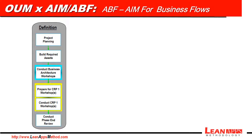ABF methodology presents five phases, just like OUM. The first one is Definition, which has precisely the same objective as OUM. We basically plan the project, build the required assets, and conduct CRP1, whose objective is to map the future process model, perform the gap analysis, and define the application setups.